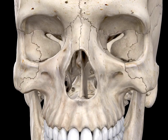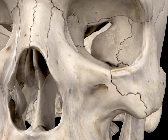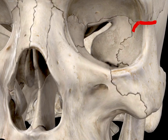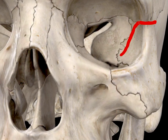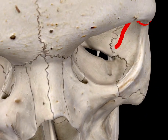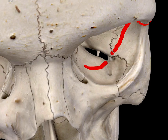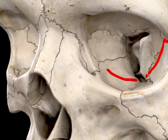The Le Fort 3 fracture line starts at the frontozygomatic suture, goes below, reaches near the inferior orbital fissure, and then goes across the inferior orbital fissure towards the medial surface of the orbit.